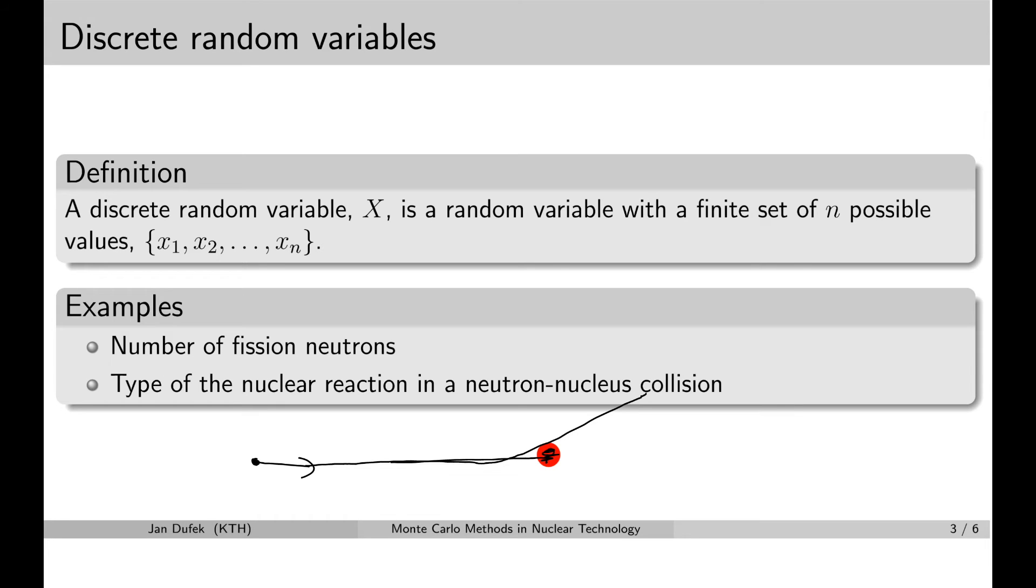So, we have three possible reaction types. Scattering, capture or fission. And again, we cannot know with certainty what reaction type would occur. We only know the probabilities associated with each reaction type.